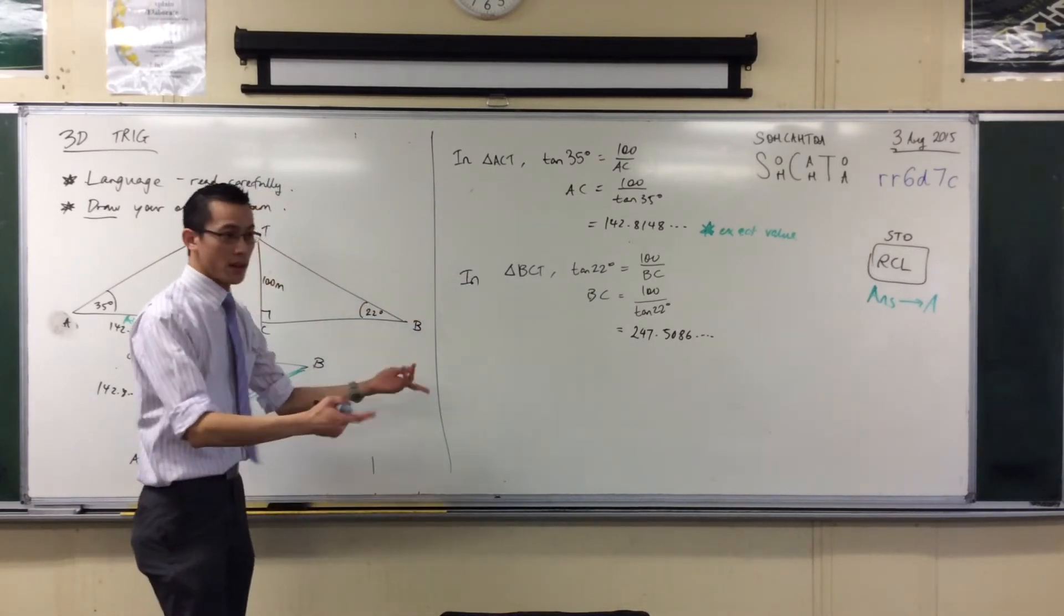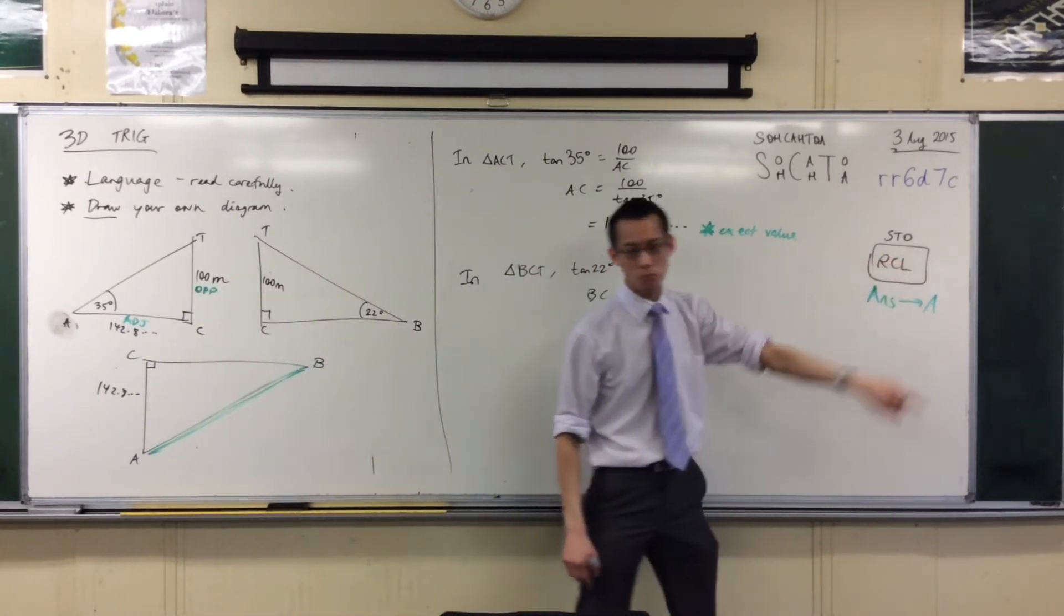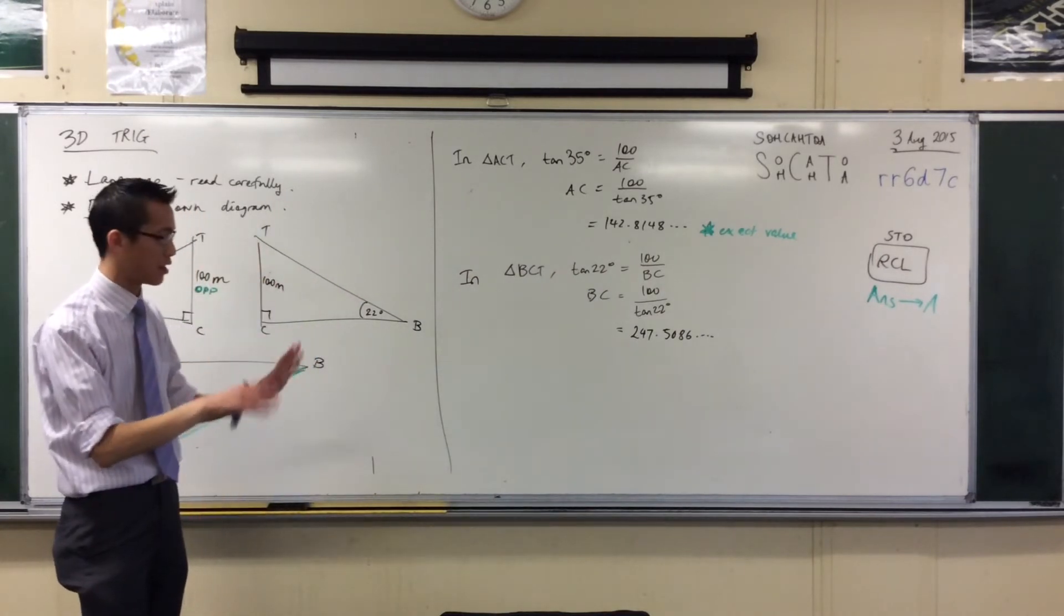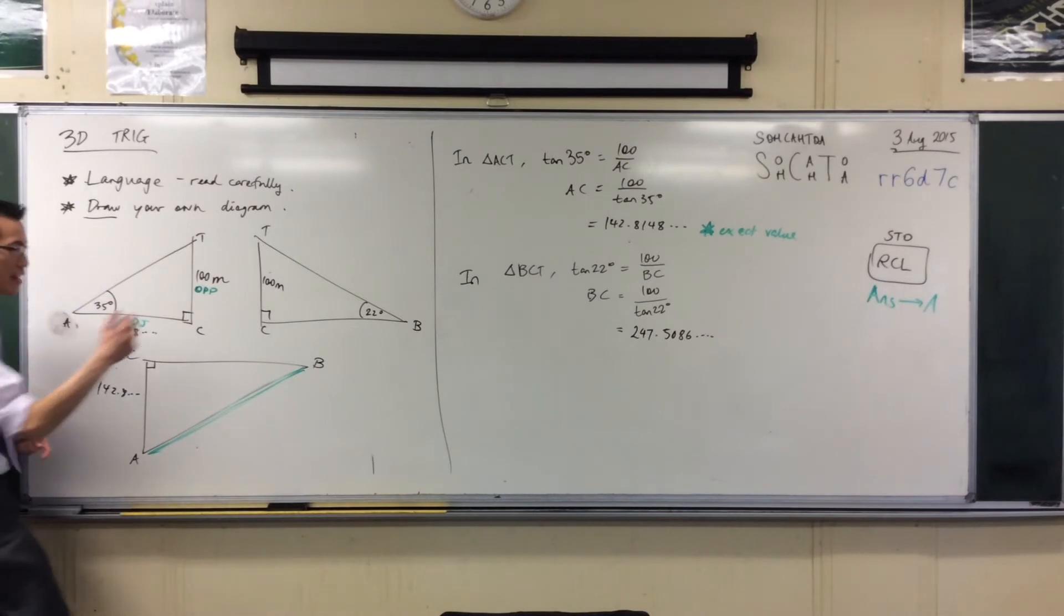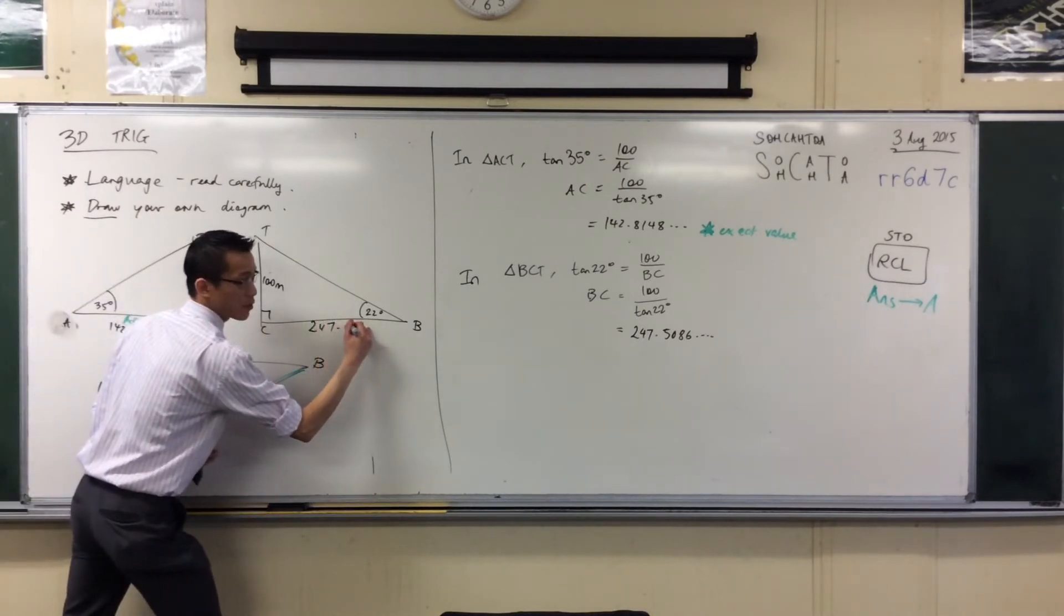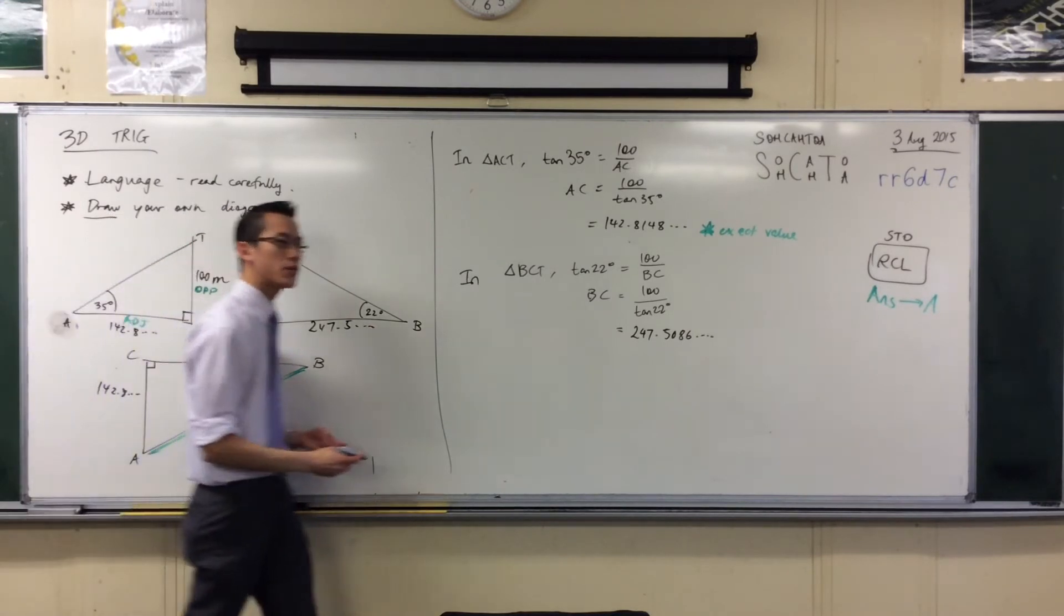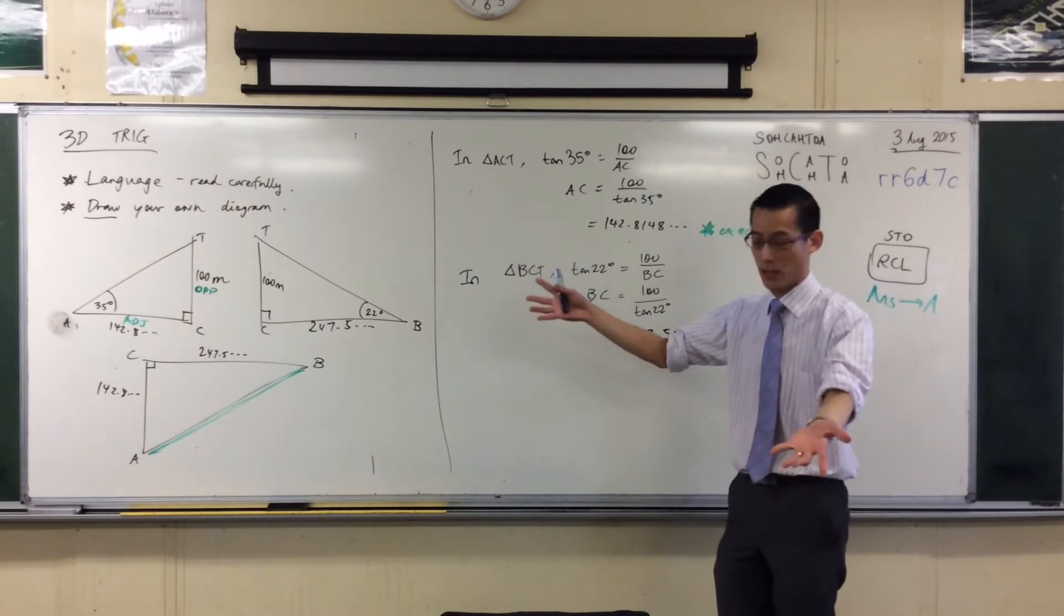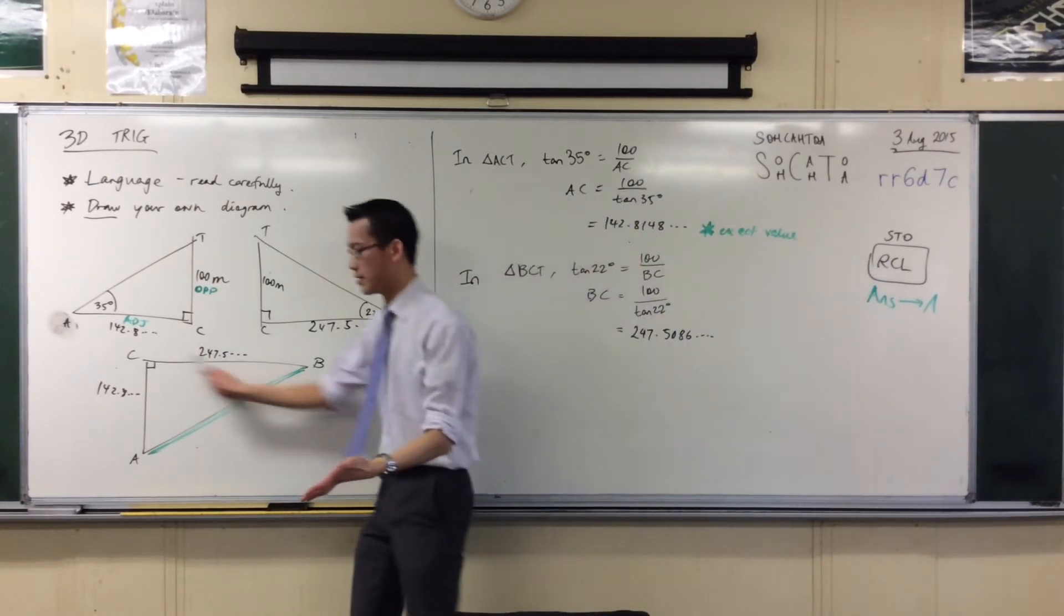Same deal: use your store button—shift, store, chuck it in B—and you'll have the answer going to B. Now I've got my second distance that I needed: 247.5. You can see what we've done now. We transformed a problem that we didn't know how to solve—3D—into a problem that we do know how to solve. In fact, it's trivially easy to solve—this is just Pythagoras.